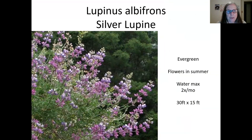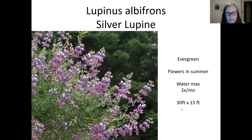The silver lupine is absolutely gorgeous in late spring and summer when it flowers and is evergreen, so you don't have a bare stump. It only needs water about twice a month to keep it green throughout the summer. They say it can grow 3 feet tall and 15 feet wide, but most of the ones I've seen in yards are only about 3 feet tall and 4 feet wide because people keep the flowers pruned back.